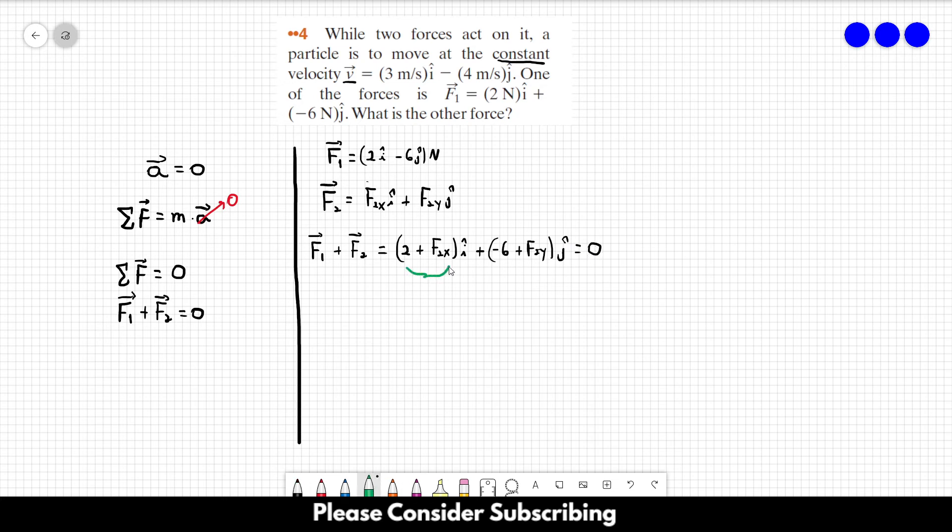So this sum should be zero, and this sum should be zero as well. So we know that 2 plus F2x is equal to zero, so F2x is equal to minus 2 newtons.